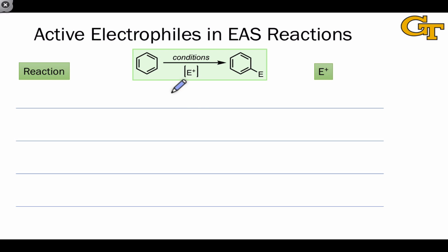The different types of reaction conditions used in EAS reactions are really aimed at generating different types of active electrophiles E+. Essentially, the strategy here to surmount aromaticity is to generate an electrophile that's so reactive that the aromatic compound can't help but form a bond to it.